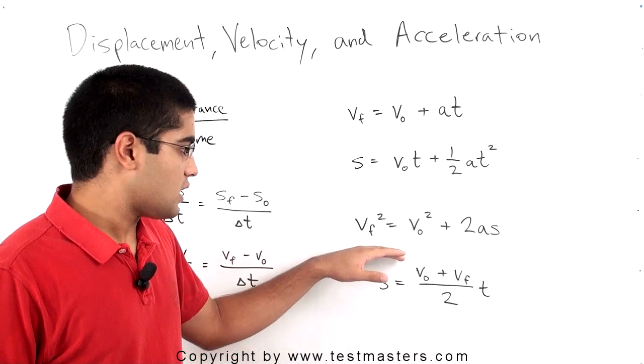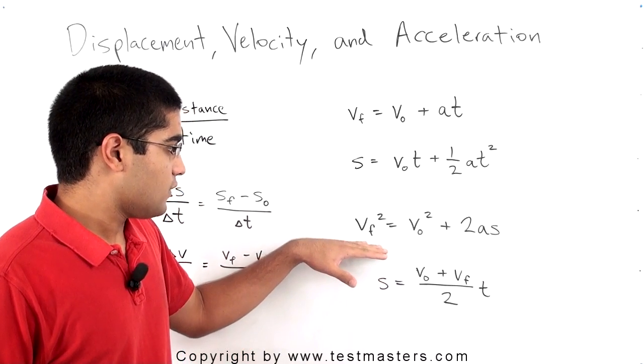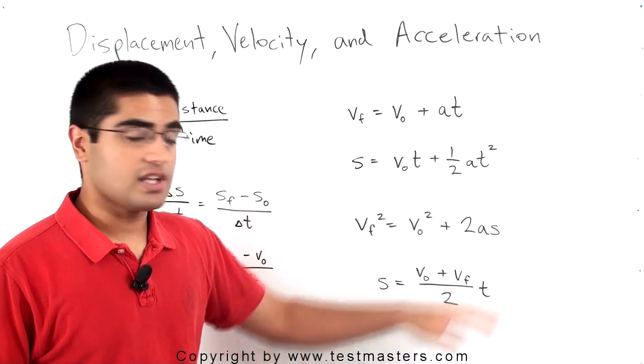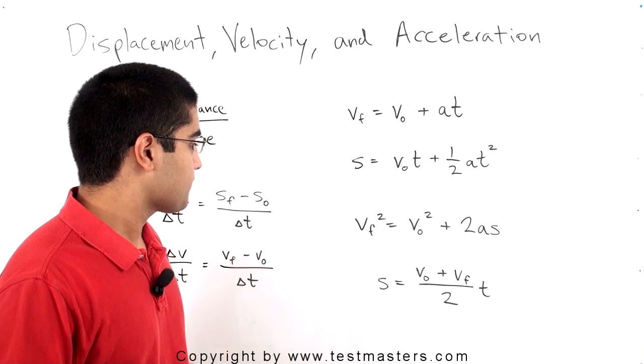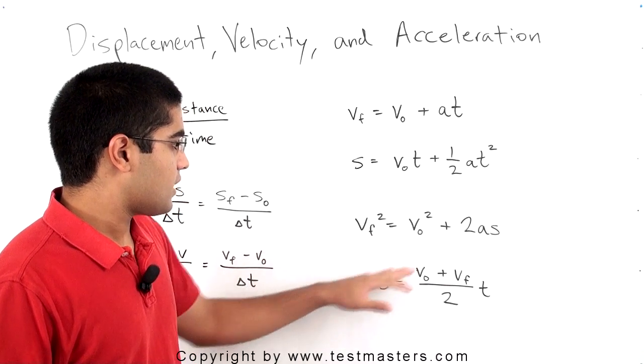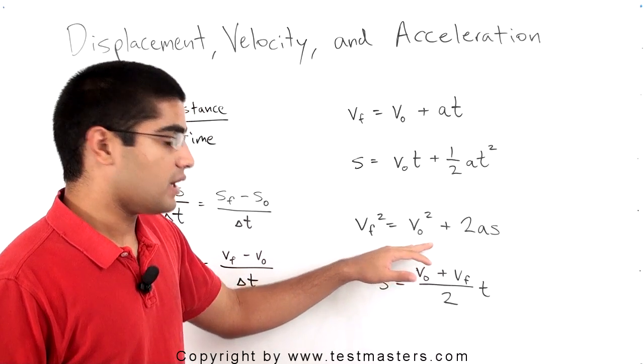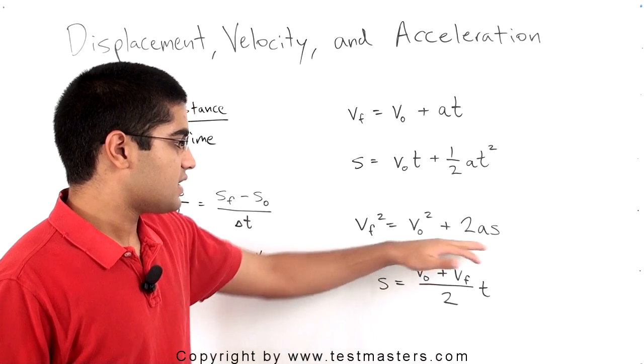This expression relates the final velocity, the initial velocity, the acceleration, and displacement without time. That makes it very useful. It's VF squared is equal to V0 squared, or initial velocity squared, plus 2AS.